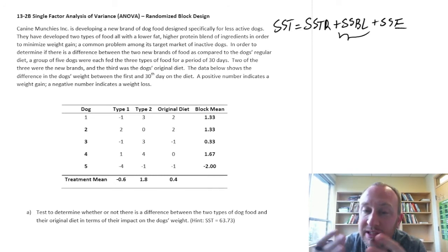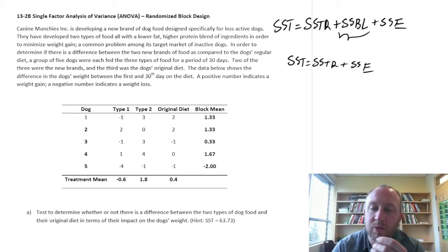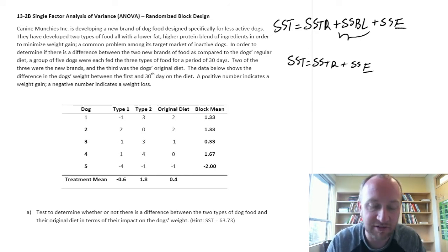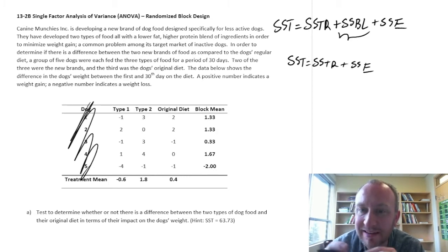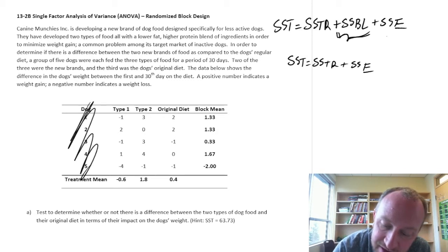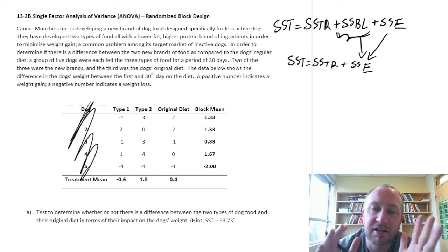If you recall, in the completely randomized experiments, we had just SST was a function of the SSTR plus SSE. Well, we can take any exercise, let's say the one that we're looking at here, and if I were to treat this as if it was completely randomized, so I eliminate the fact that we're using the same observational units for the different treatments, what this would do now is it would take SSBL, so that source of variation that is due to heterogeneity or differences across treatments, and it would all just get lumped into SSE.